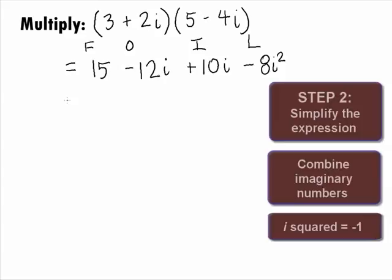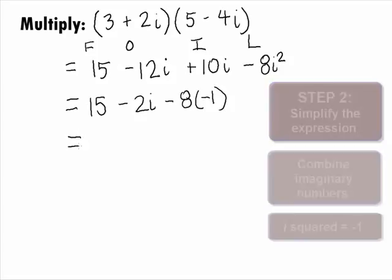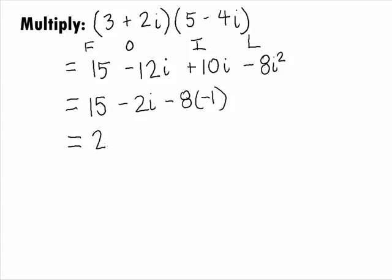In Step 2, we want to simplify the expression. When we do this, we get 15. Combining the negative 12i plus 10i, we get negative 2i. And substituting the i squared for negative 1, we get negative 8 times negative 1. This will simplify as 23 minus 2i.